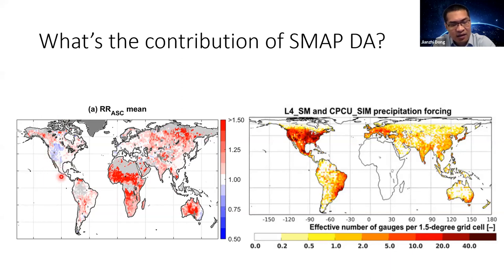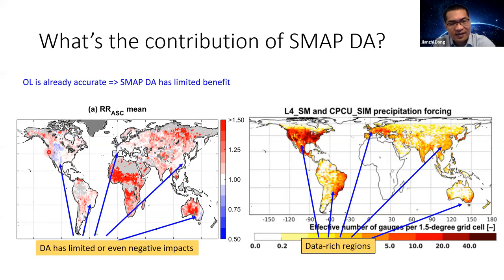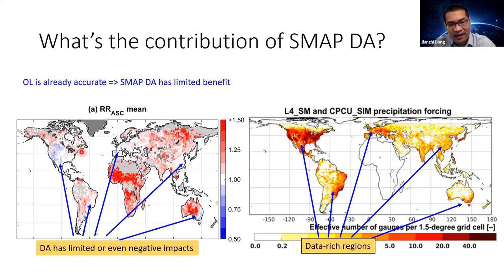Here are the results. The red areas mean that data assimilation significantly benefits soil moisture estimates, and the blue areas mean data assimilation may degrade the original open-loop run. We find clearly that over data-rich regions — for example, North America, Europe, southeastern China, and the eastern coast of Australia — SMAP data assimilation has very limited value. This is because the input meteorological forcing data is very accurate, so the open-loop run is already highly accurate and it is very hard to further benefit it using data assimilation. If something goes wrong, we are very likely to degrade the original open-loop run, so we need to be very careful when doing data assimilation over data-rich regions.